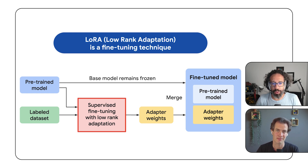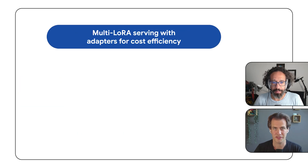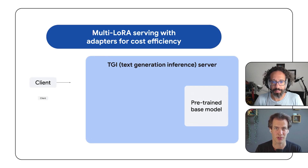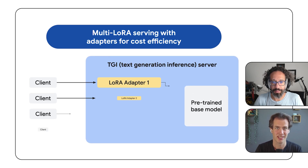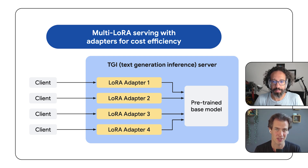Why would you want to deploy Gemma 2 with multiple LoRa adapters on GKE? Well, there are a few benefits. In a multi-LoRa deployment, you deploy a single base model and then load multiple LoRa adapters, and you can dynamically select a different adapter for each incoming request. So you don't have to create multiple deployments, which is more cost-efficient.